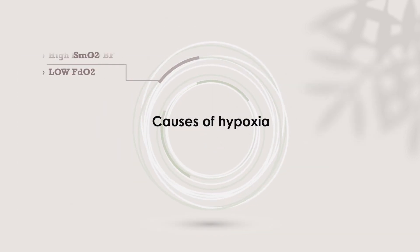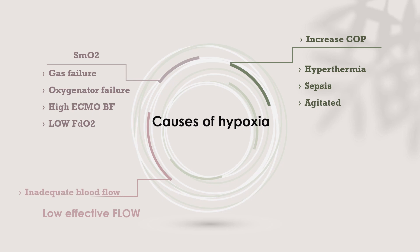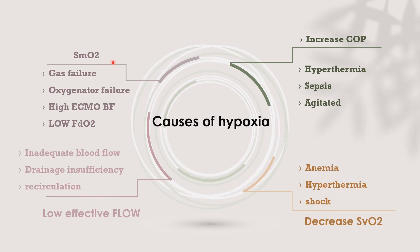The causes of hypoxia, based on the previous equation, are: decreased post-oxygenator oxygen saturation from gas failure, oxygenator failure, high ECMO blood flow, or low FiO2 from the ECMO side. Low effective flow from inadequate blood flow, drainage insufficiency, or recirculation. Increased cardiac output, which occurs in hyperthermia, sepsis, and agitation. Decreased venous oxygen saturation from anemia, hyperthermia, and shock.